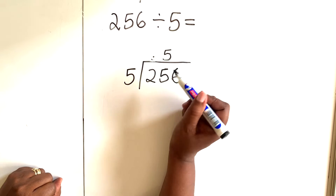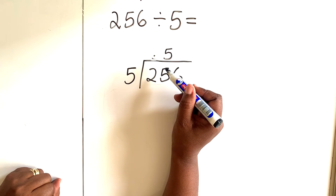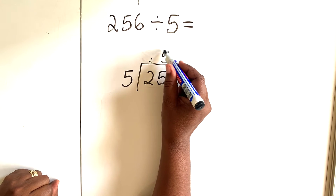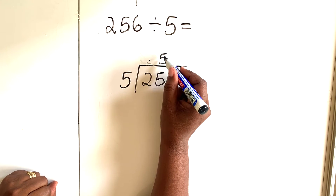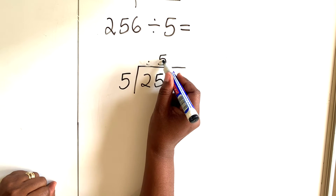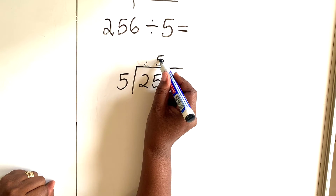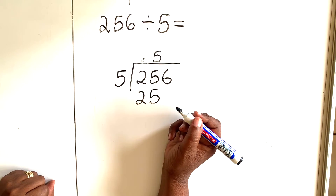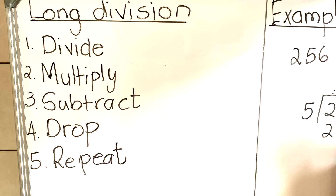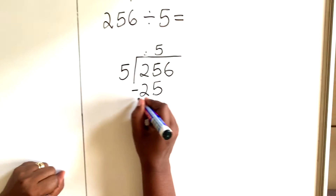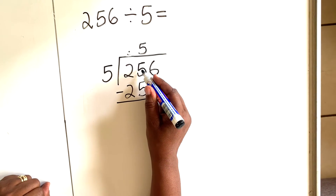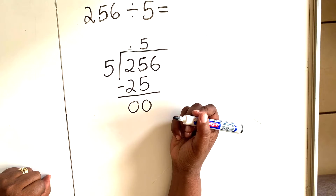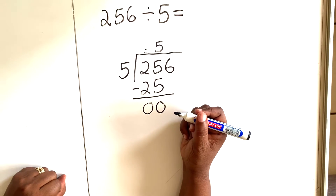We divided first, now we multiply. You take the answer you just got — the quotient — and multiply: five times five is 25. Write 25 below. That's step two. Step three is subtract: 5 minus 5 is 0, 2 minus 2 is 0.